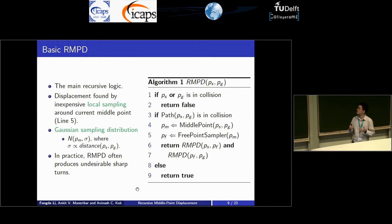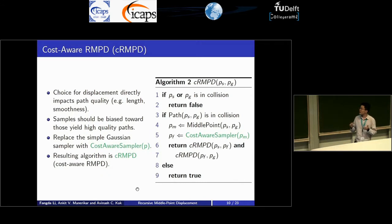Therefore, we would like to improve the quality of the path. The way we do that is to introduce a new sampler, a cost-aware sampler, in place of the original naive Gaussian sampler. The intuition behind this choice is that the choice for the middle point directly impacts the eventual path quality. Therefore, if we can choose a better middle point, we will end up with better paths. In this cost-aware sampler, what it does is bias the sampling distribution toward regions where the points will yield better quality paths. With this modification, we call our algorithm cost-aware recursive midpoint displacement algorithm, CRMPD.